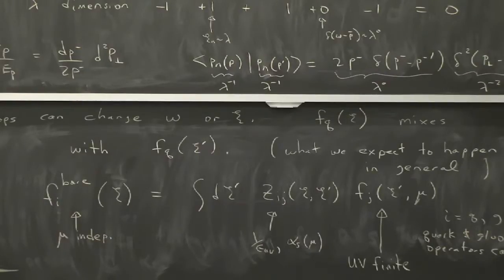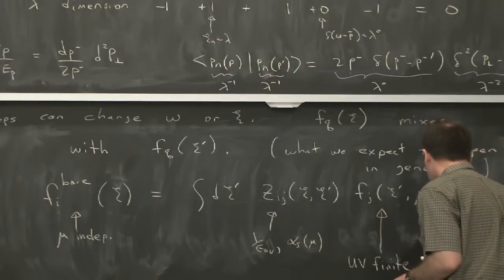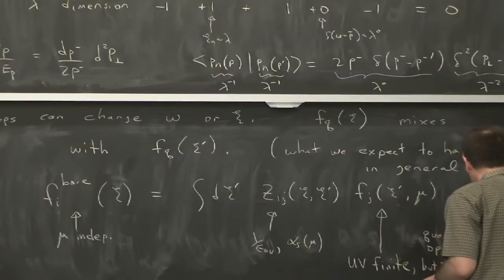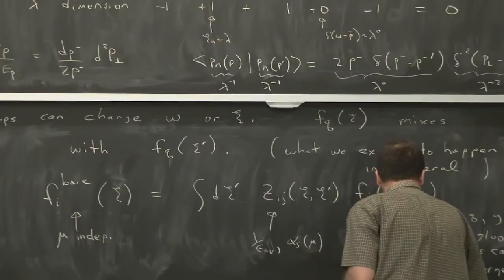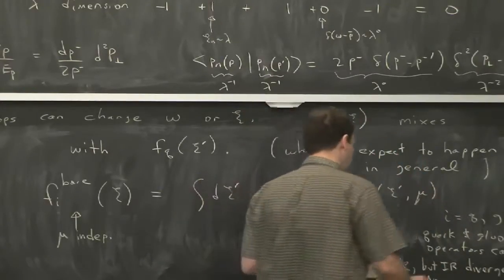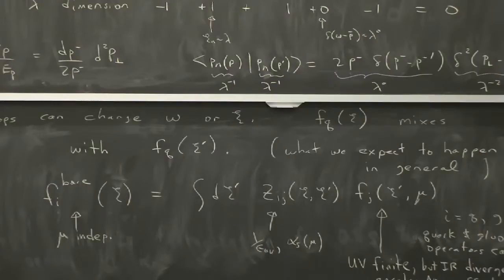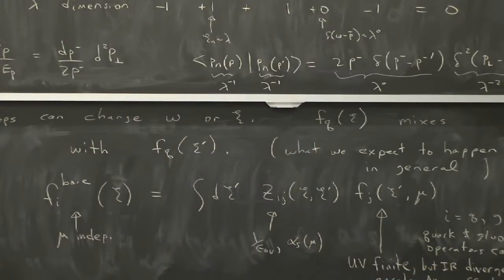There are two operators in the effective theory at the same order in lambda, and they can mix when you do the renormalization. This bare object is mu-independent. In MS-bar, the Z matrix has all the 1/epsilon_UV terms, and it depends on alpha(mu), c, and c'. The renormalized piece is UV-finite. This is the low-energy matrix element — low energy meaning physics of Lambda_QCD, physics of the initial state proton. It can be IR divergent, and it encodes Lambda_QCD effects, which is what parton distribution functions are.